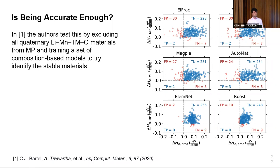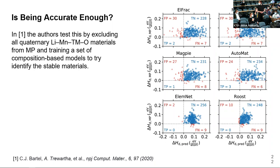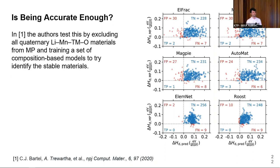On whether graph-based representations solve the uniqueness problem: the speaker explained it depends on what you mean by uniqueness. For example, molecules can have different conformers with the same graph. There are a few graph-based representations that account for this, and the speaker mentioned their next talk would cover such a representation.